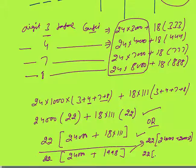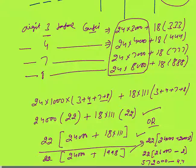Simplifying: 18 × 111 = 1998. So total = 22 × (24000 + 1998) = 22 × 25998. Calculating: 22 × 26 = 572, accounting for the thousands gives the final answer of 571,956.